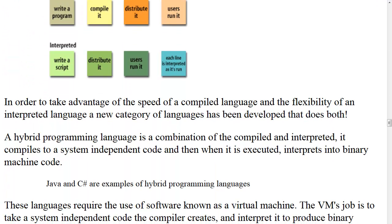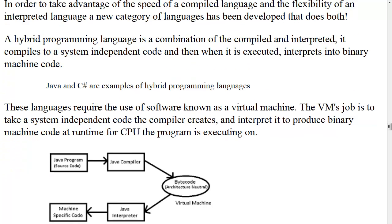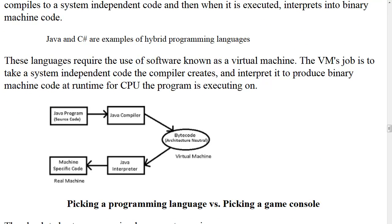To take advantage of the speed of a compiled language and the flexibility of an interpreted language, a new category called hybrid programming languages has been developed. A hybrid language compiles to system-independent code, and then when executed, interprets it into binary machine code for that specific CPU. Java and C# are examples of hybrid programming languages, and they require software known as a virtual machine. The VM takes the system-independent code and interprets it to produce binary machine code at runtime.